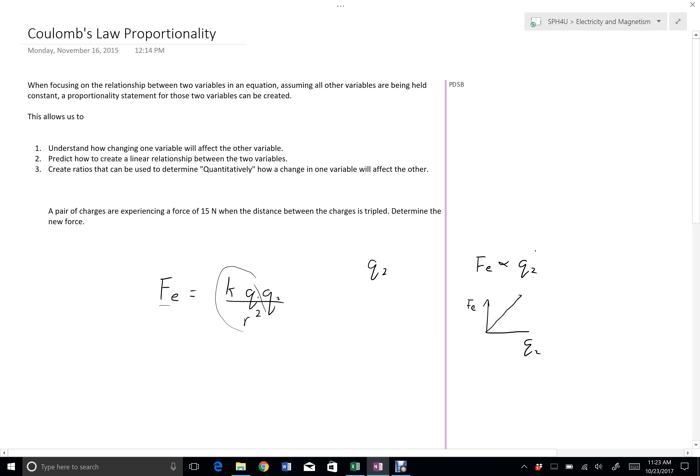I can also do problems where I change q2, but I keep everything else the same, and I can see quantitatively what effect that will have on the force. So for example, because it's a linear relationship, I can set up the proportionality in a linear way where q1 directly and f2 goes to q2. That's all pretty straightforward for a linear relationship like that.